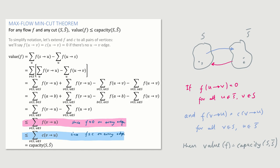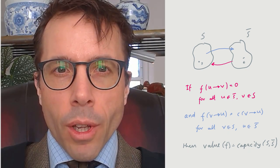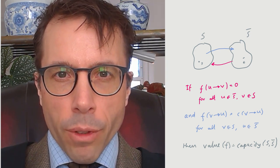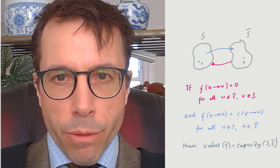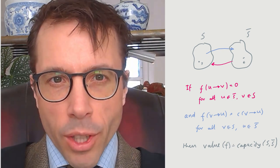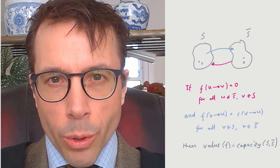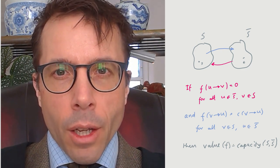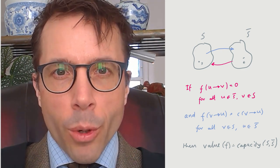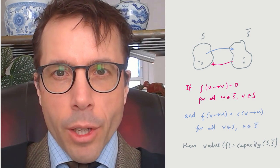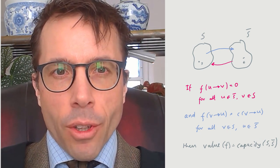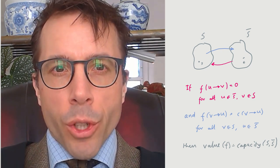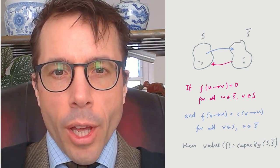Let's just repeat that. What we said is, if we manage to produce a flow f and a cut set S, S bar, such that the flow on all edges from S to S bar is equal to capacity, and the flow on all edges from S bar to S is equal to zero, then we know that the value of our flow is equal to the capacity of our cut. And then, as we reasoned before, our cut acts as a certificate, which proves that our flow is a maximum flow.